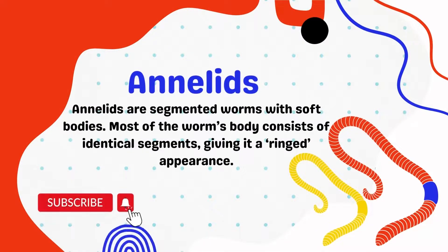Annelates are segmented worms with soft bodies. Most of the worm's body consists of identical segments, giving it a ringed appearance.